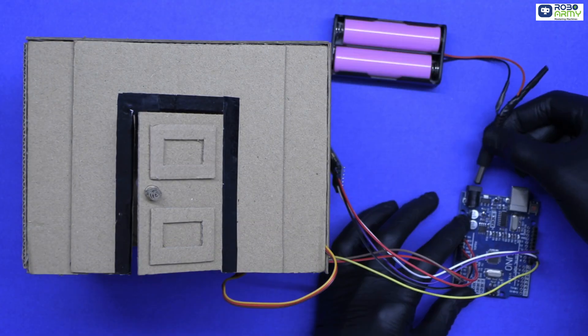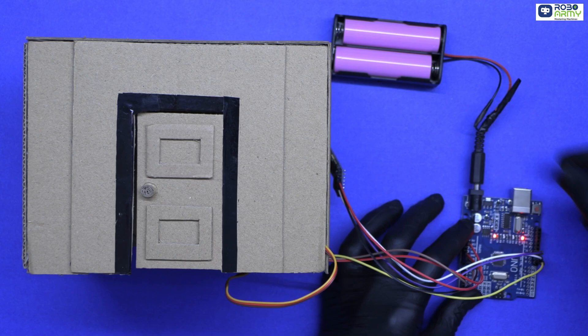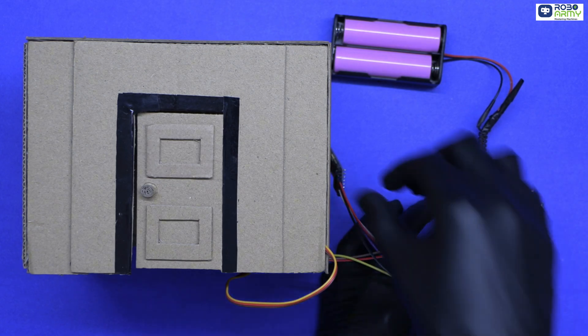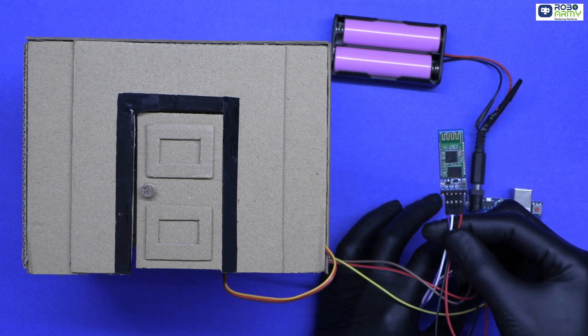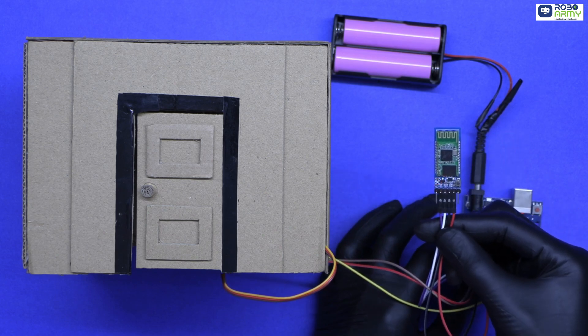Let's power the Arduino using a power bank or a 9-volt battery via DC power jack. The Arduino is now ready to communicate with the Bluetooth module. You will see the LED on the Bluetooth module start blinking fast, indicating it's ready to pair.